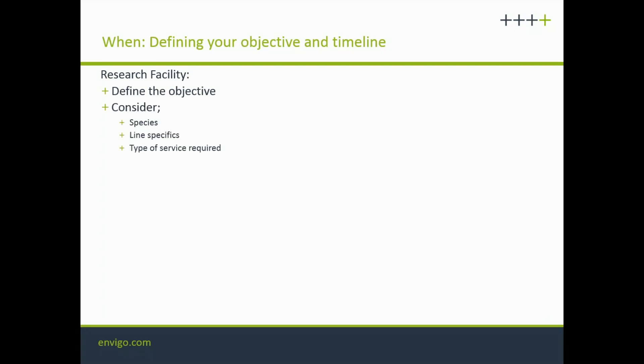We're going to start with 'when,' because defining your objective is really your starting point, and that's the responsibility of you as the research facility. In order to define your objective, you need to consider the species in your facility, the specifics of those lines, and whether there are any complex phenotypes associated with the lines — things like homozygous lethal or poor breeding performance.